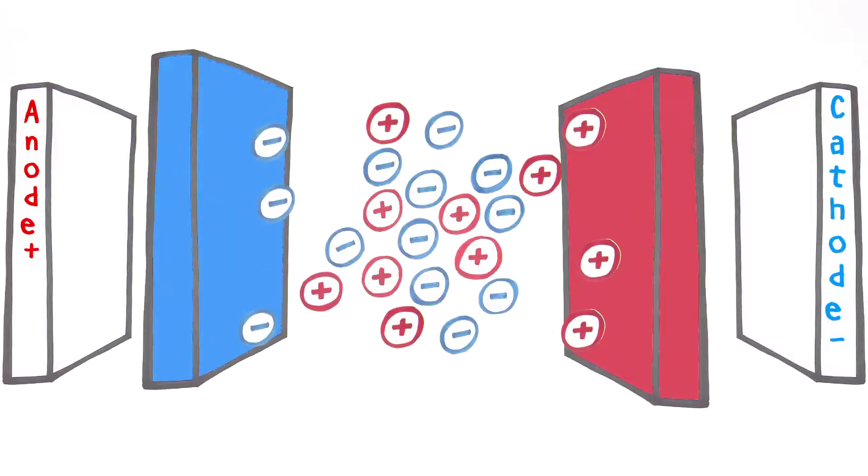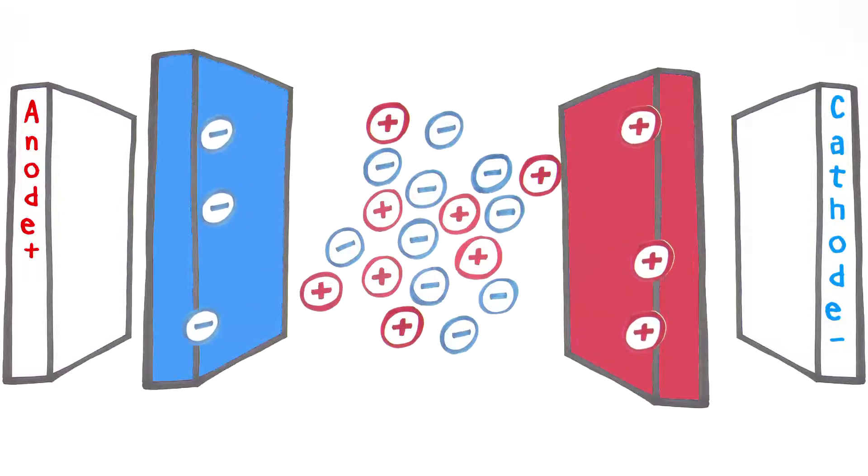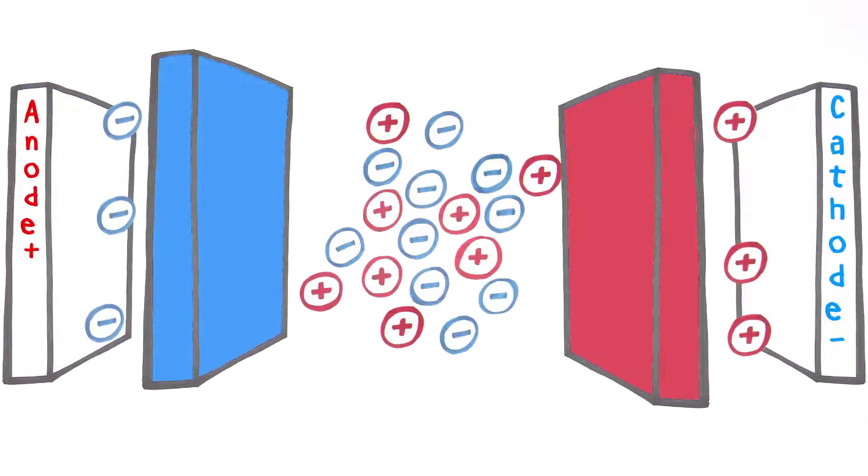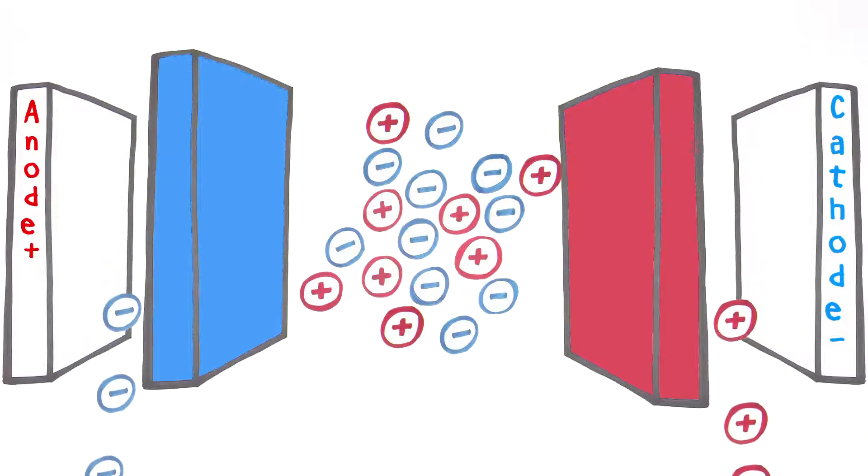Ions can only pass through an oppositely charged membrane, so the alternating cation-selective and anion-selective membranes trap the ions and allow them to be flushed out with a reject stream.